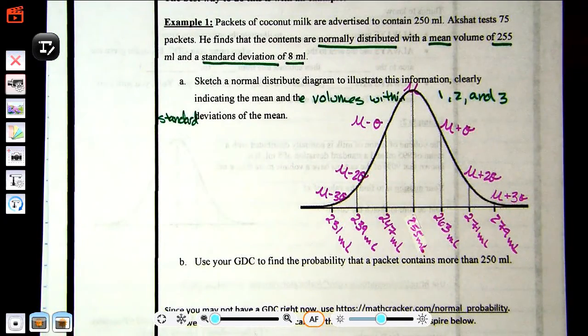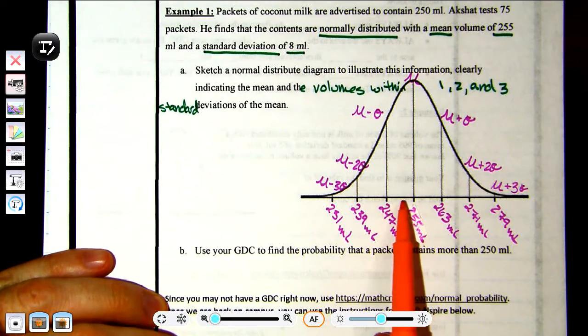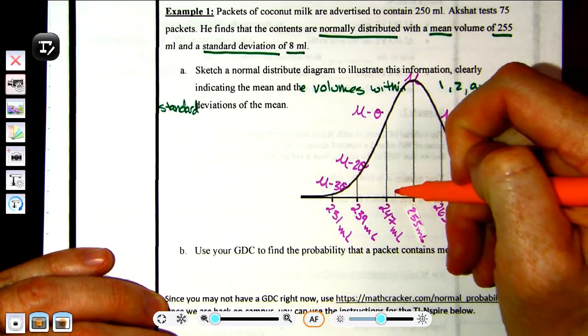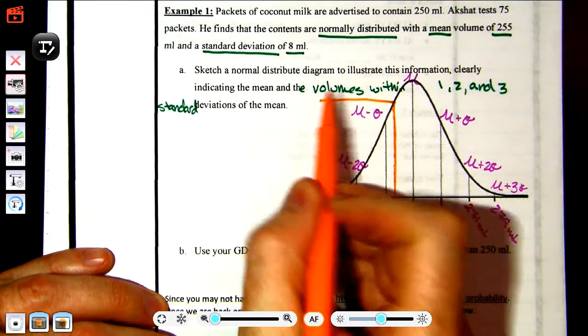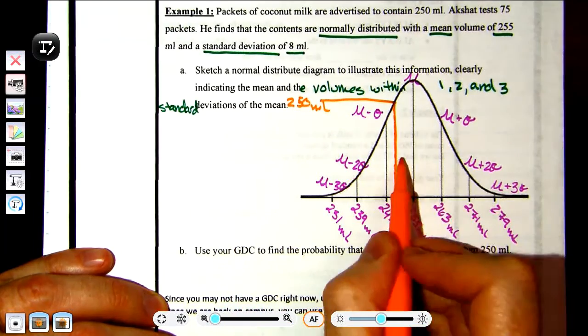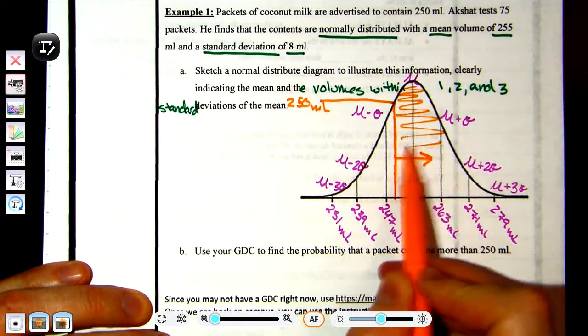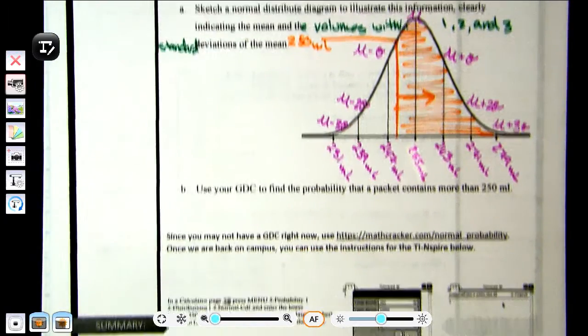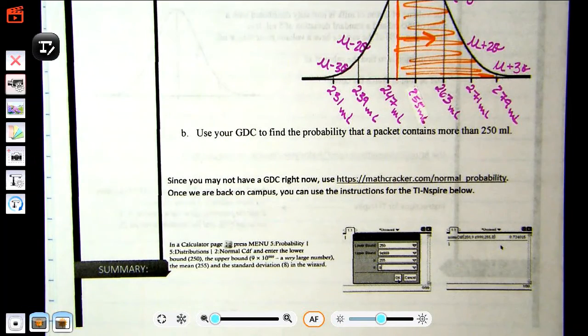But now it says, use your GDC to find the probability that a packet contains more than 250 milliliters. 250 actually lands right below our mean, but not quite to the first standard deviation below, which is 247. So it's actually going to be somewhere in here. This represents 250 milliliters, and I want to know what percentage of the data is going to have more than that. So what we learned last class isn't really going to help us. We're going to need the use of a calculator.